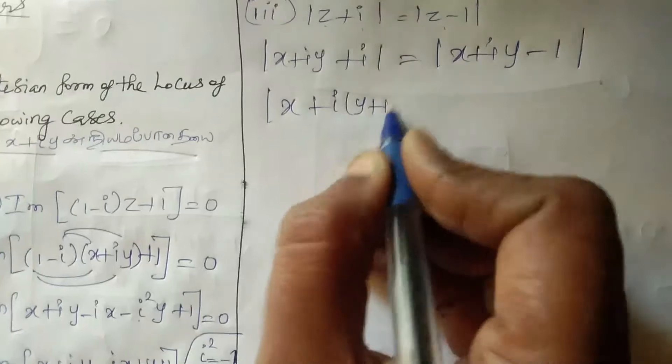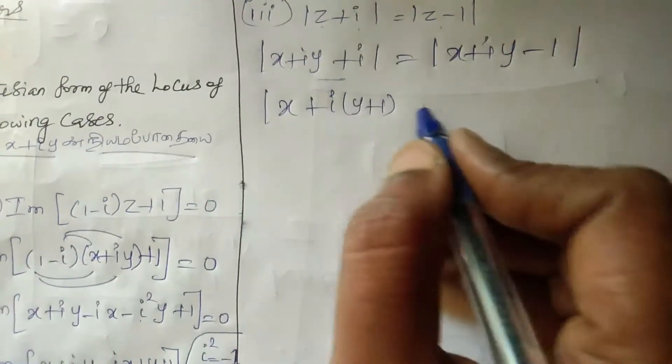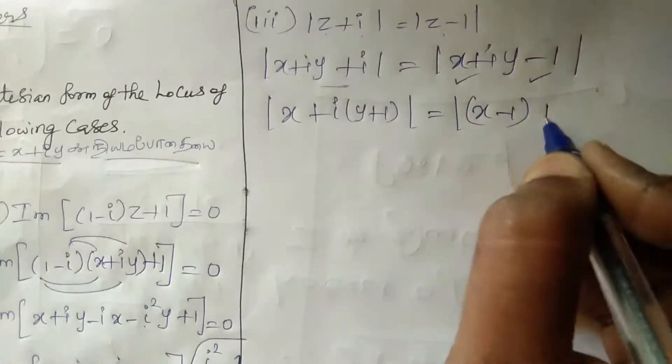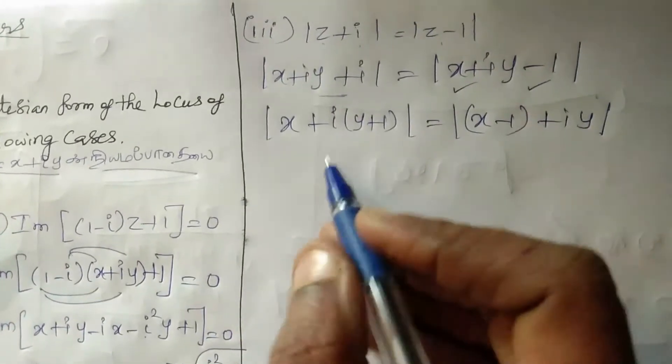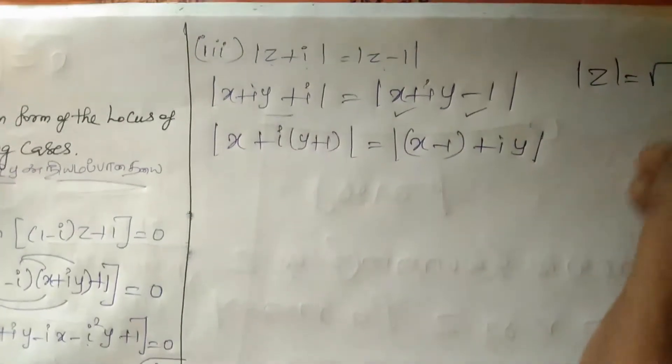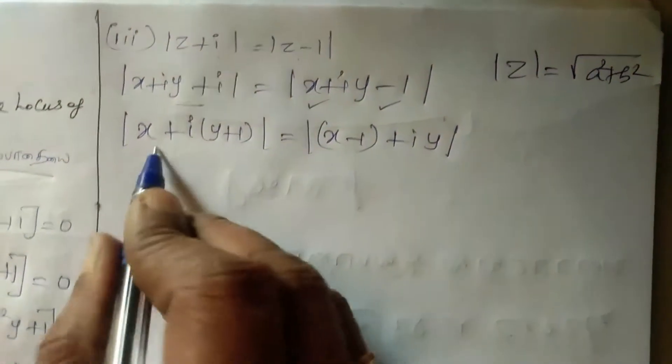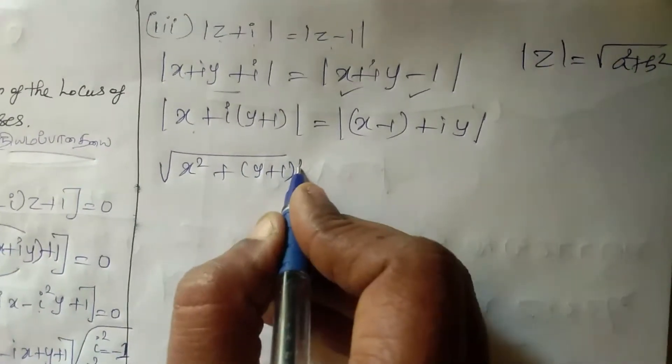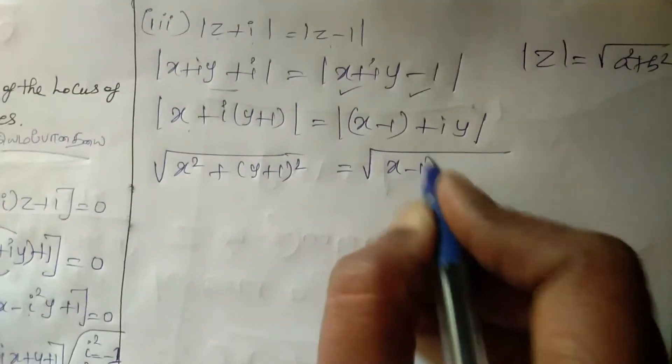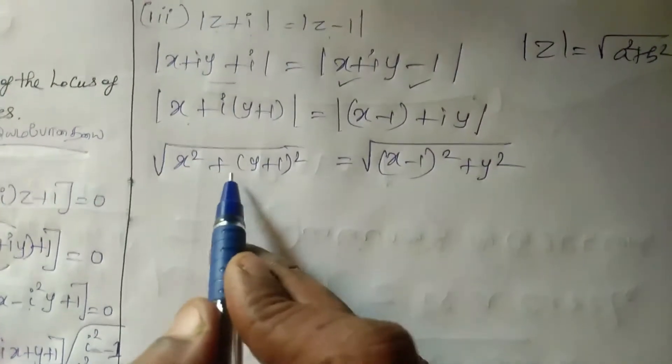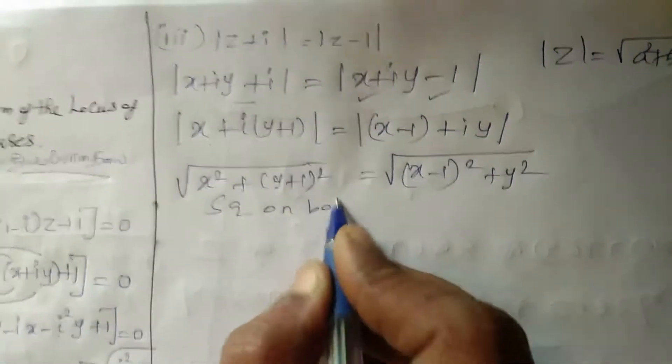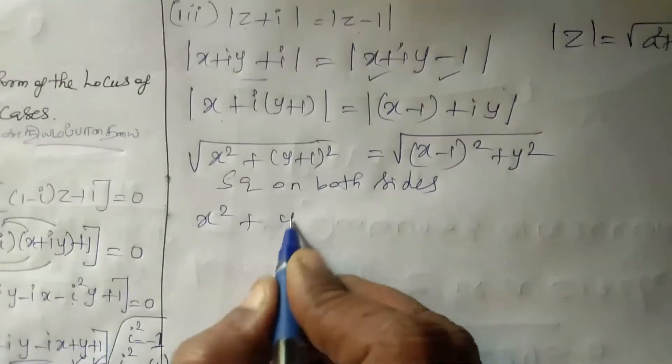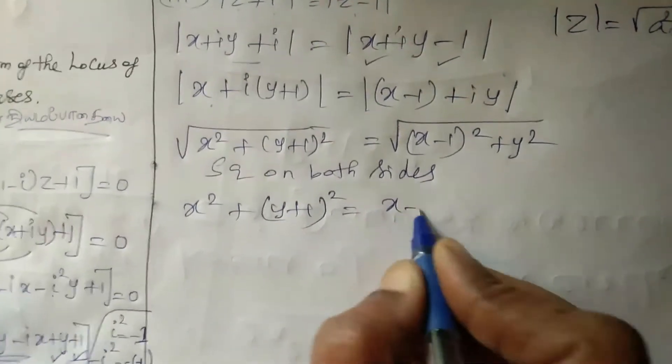X plus Y plus 1 equal to X minus 1 plus IY. We can understand Z is equal to X plus IY. Modulus of Z is equal to root of X squared plus Y squared. Root of X squared plus Y plus 1 the whole squared equal to root of X minus 1 the whole squared plus Y squared.